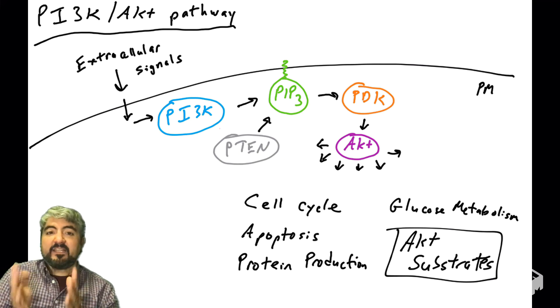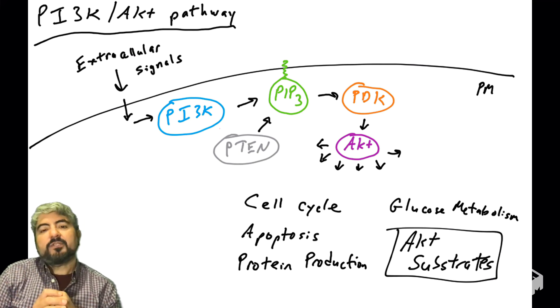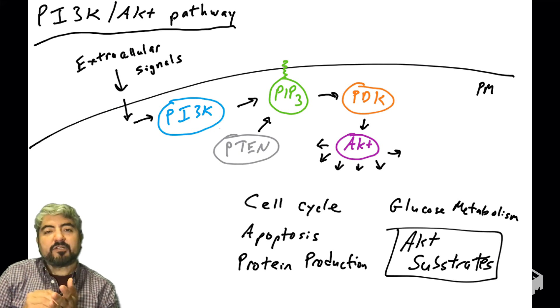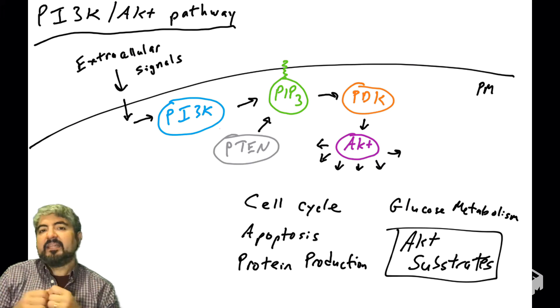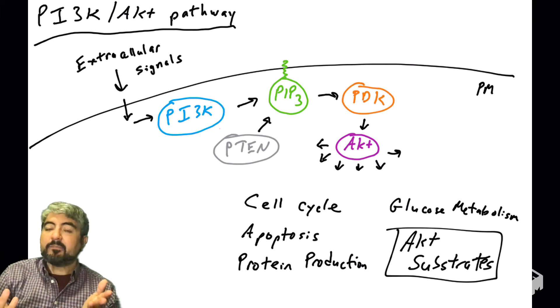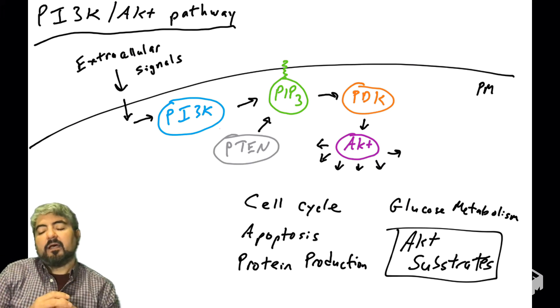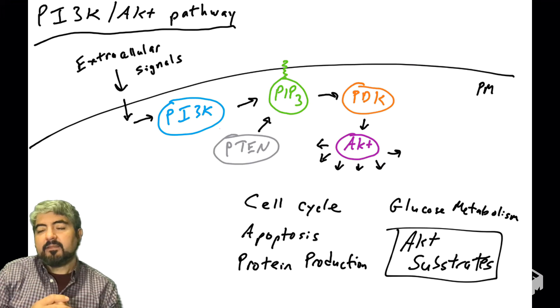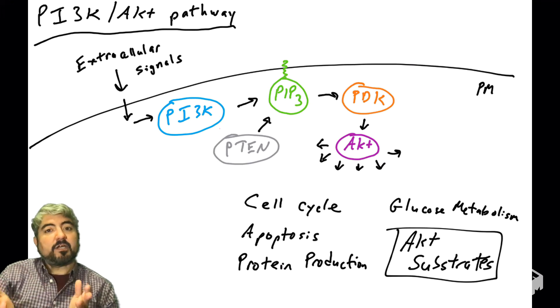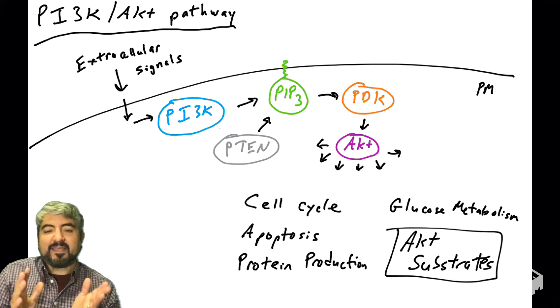In these videos, we're going to talk about substrates of the kinase AKT. AKT is a kinase that phosphorylates many substrates — over 100. So we're going to talk about those substrates.